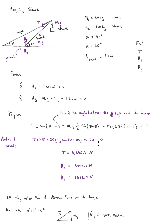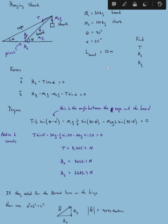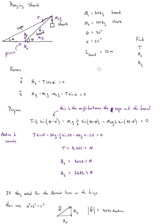Now the hanging shark question. A shark hangs from a string being propped up by a board. The board makes an angle theta with the ground and is also supported by a rope tied further back — otherwise the whole thing would rotate down. I give you the mass of the board, the mass of the shark, the angle the board makes with the ground, the angle the rope makes with the ground, and the length of the board. However, the board length will turn out to be irrelevant — it cancels out completely.